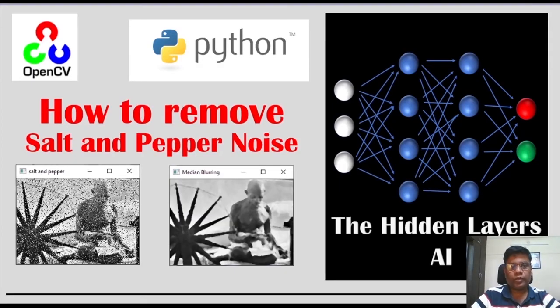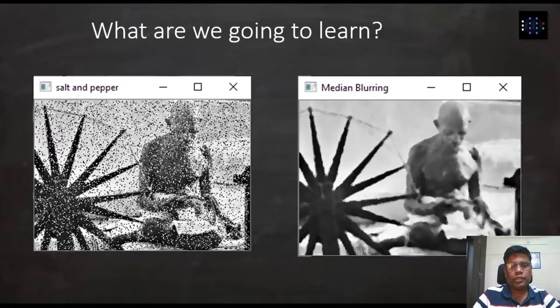Hello, we are going to cover today how to remove salt and pepper noise from images. On the left side, you see an image with salt and pepper. Basically, you can see the image has lots of black dots as well as white dots which represent salt and pepper noise. This kind of noise is found on old images.